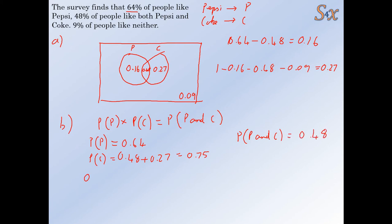Now, when we multiply the 0.64 for Pepsi multiplied by the 0.75, we do get, let me type that in to check. We get 0.48, which matches with the probability of Pepsi and Coke. These two match. So events are independent.